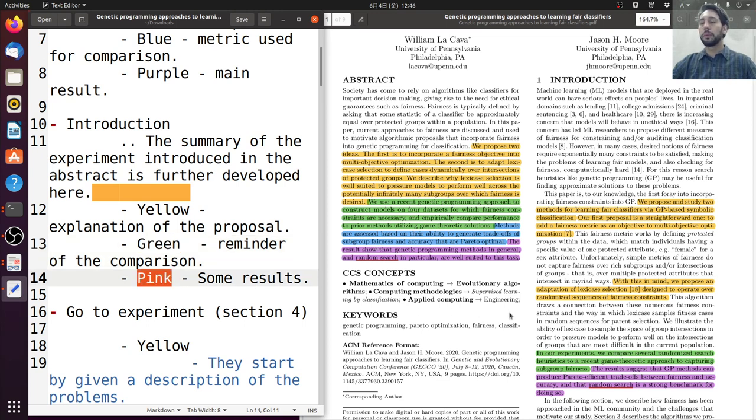Then in pink, they show, in purple, sorry, they show the results. Again, with random search, random search. GP, the grand genetic programming methods. They do well, but GP is super good. So it's very nice, you can connect everything together.